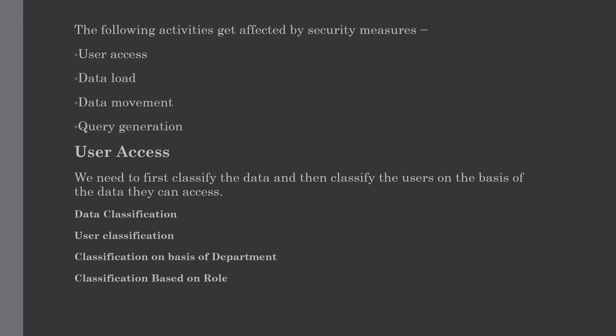The next topic in user access is classification on the basis of department. Consider a data warehouse where users are from the sales and marketing department. We have a security top-down company view, with access centered on different departments, but with possible restrictions at different levels. If departments access different data, we should design security access for each department separately. This can be achieved by departmental data marts. Since these data marts are separated from the data warehouse, we can enforce separate security restrictions on each data mart.